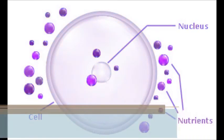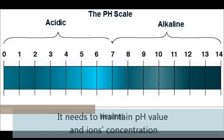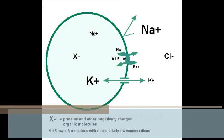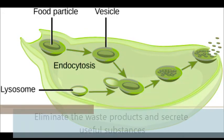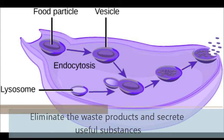Living cells absorb water, nutrients, excretion, exchange gases. It is to maintain pH value and ion concentration. Eliminate the waste product and secrete useful substances.